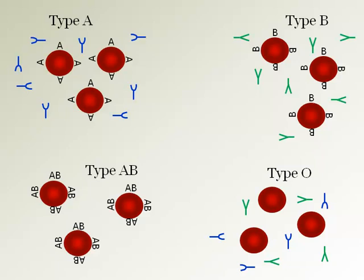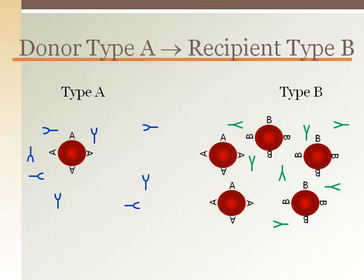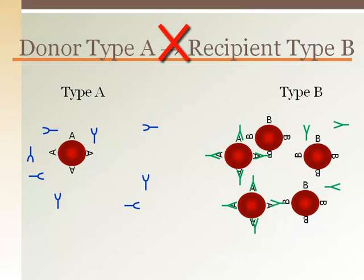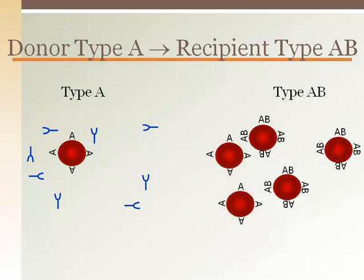When considering whether or not a particular blood type can or cannot donate to another, it is important to identify the surface marker on the red blood cell or antigen of the donor and the plasma antibody of the recipient. Blood type A cannot donate to type B because the anti-A antibodies in the plasma of the type B recipient will bind to the A surface markers of the incoming blood cells. Blood type A can donate to type AB because there are not any anti-A antibodies in the plasma to attack the incoming type A red blood cells.